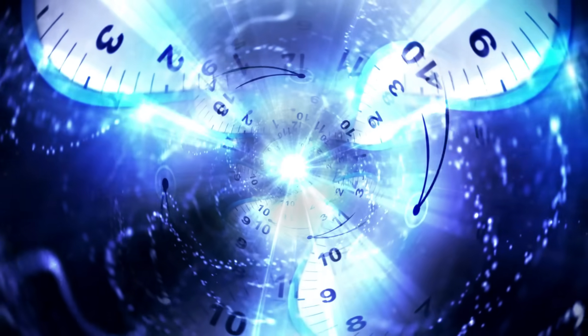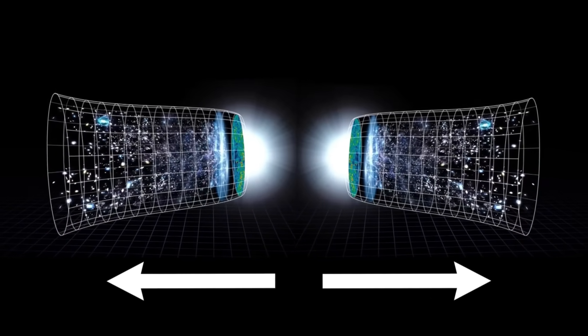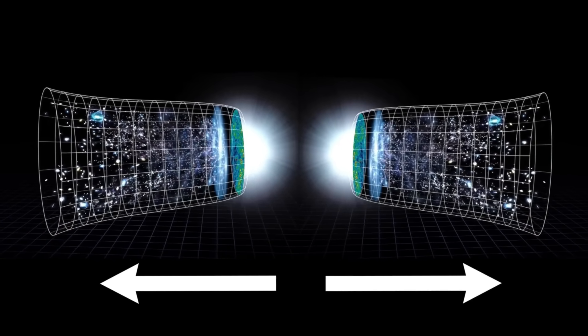They proposed that the initial singularity, instead of being a one-way origin, acts like a mirror in time. On one side, time flows forward. On the other, it flows backward, like a cosmic reflection. This mirror at the Big Bang aligns with the idea that every physical process has a mirror counterpart, where space, time, and particles are reversed, thus following CPT symmetry, a fundamental balance in nature.